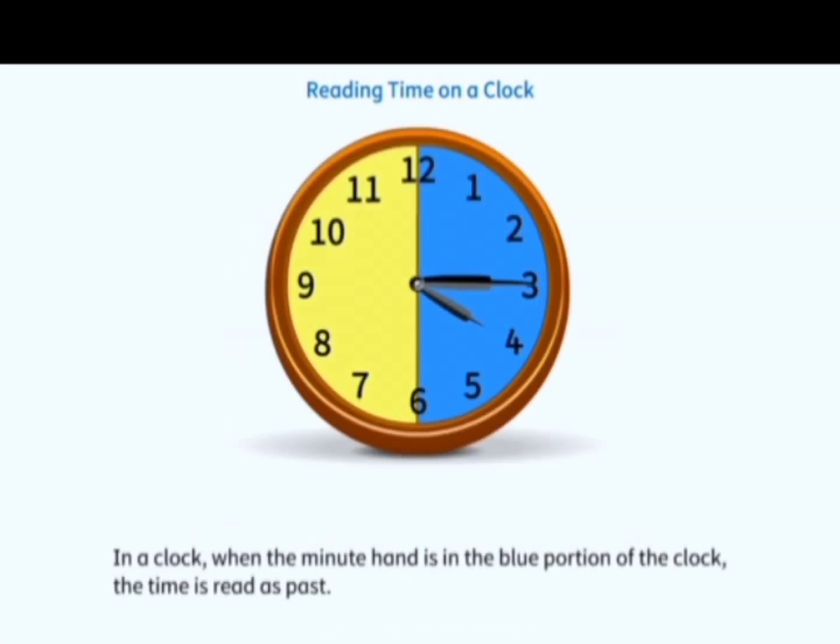In a clock, when the minute hand is in the blue portion of the clock, the time is read as past. For example, 15 minutes past 4.